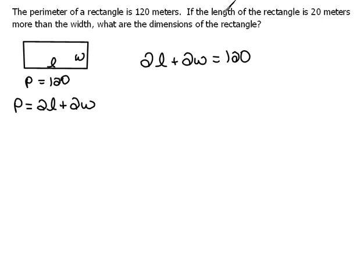Now, the next sentence says, if the length of the rectangle is, remember what the word 'is' means when we translated English into mathematical statements? This would be the same thing as writing L equals. The length is 20 meters more than. More than was a key word for addition. So this is 20 more than, or 20 plus, the width. And then it says, what are the dimensions of the rectangle? So they're asking us for length and width.